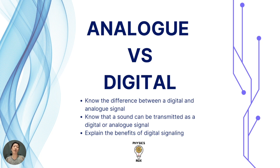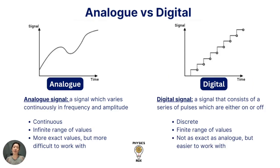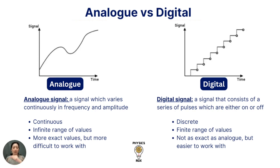First, we need to be clear about what an analog signal is and what a digital signal is. Here is a slide showing a direct comparison. On the left hand side we have a graph visualizing what an analog signal looks like. An analog signal is a signal which varies continuously in terms of frequency and amplitude. Analog signals are continuous, so they have an infinite range of values — the values are more exact but can be more difficult to work with.